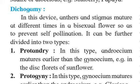Dear students, we are going to discuss the next outbreeding device, which is called Dichogamy. We have already discussed the first outbreeding device, Unisexuality. In the case of unisexuality, male and female flowers are developed on different plants, called dioecious plants. Some plants have both male and female flowers on the same plant, called monoecious plants. In both conditions, cross-pollination is favored and self-pollination is prevented.